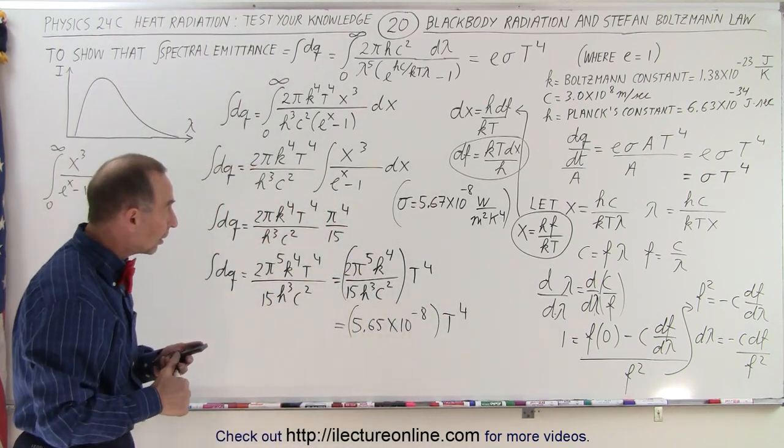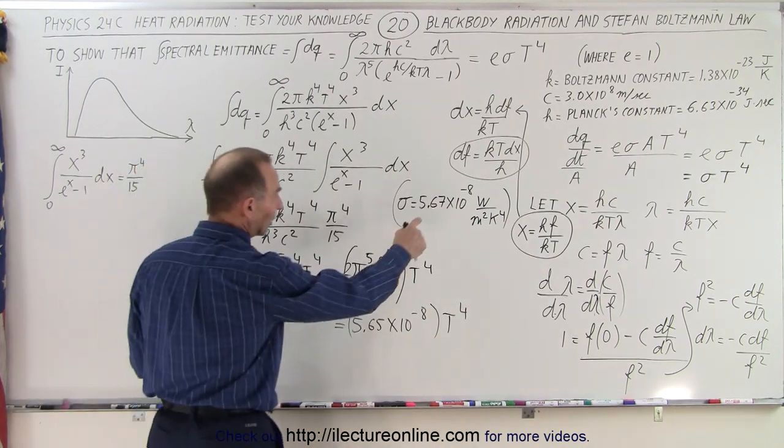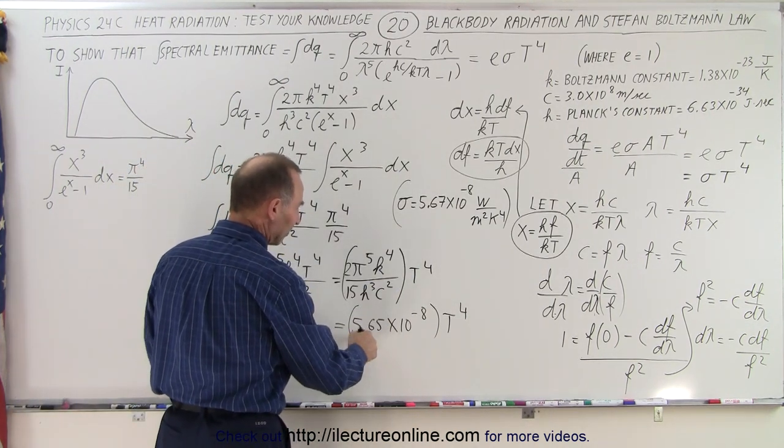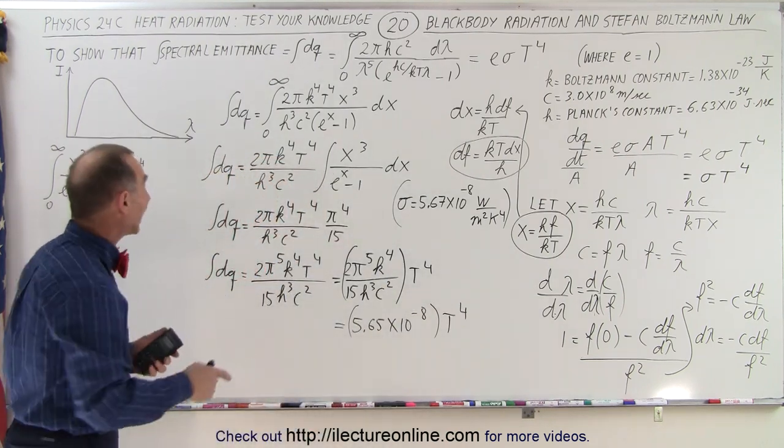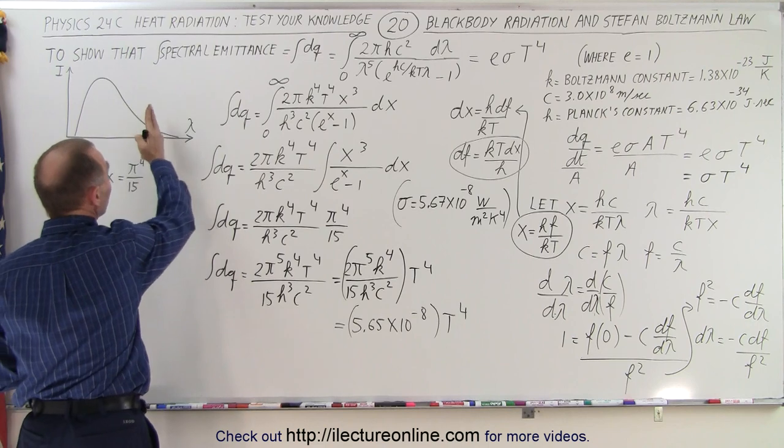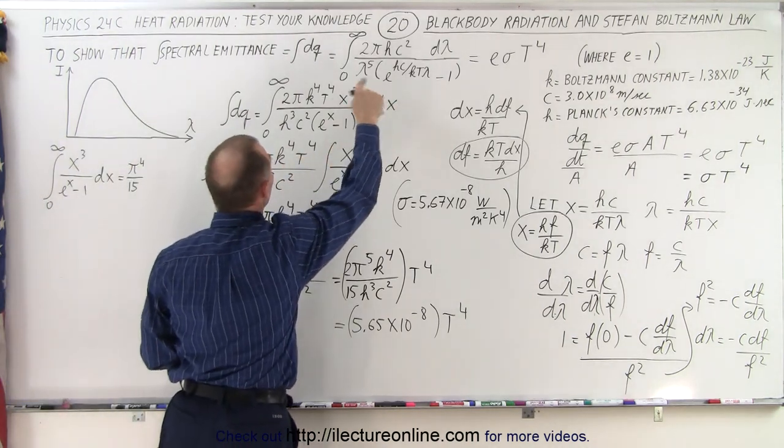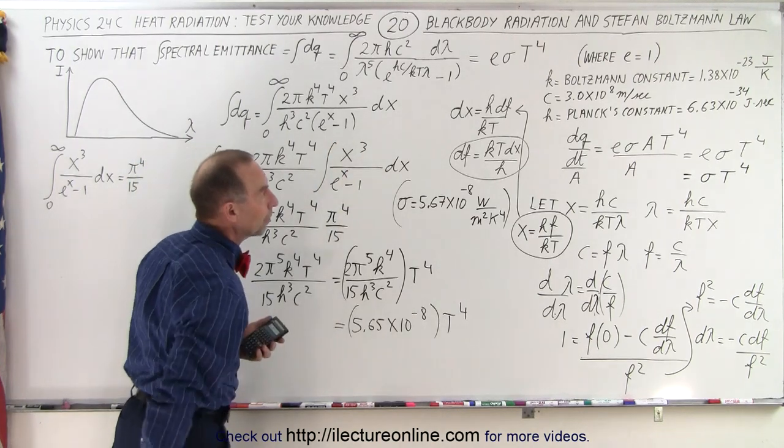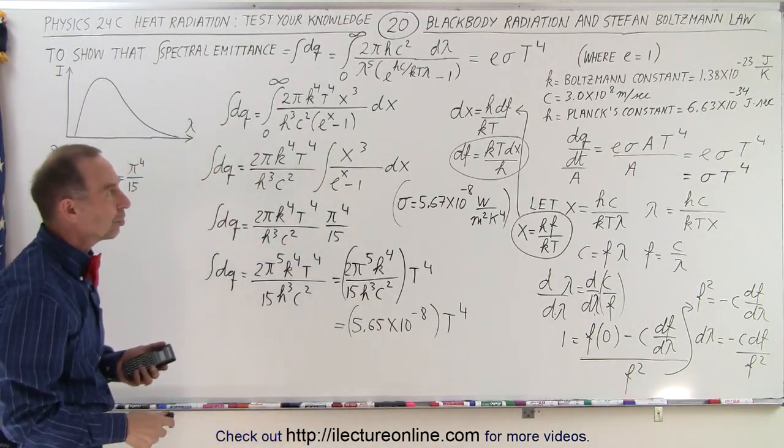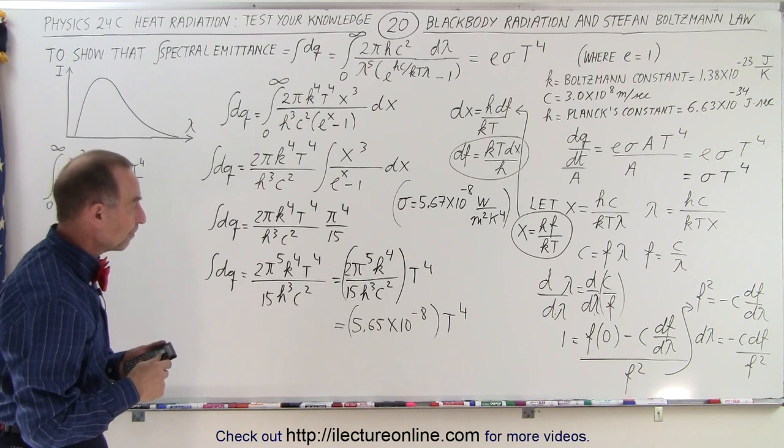So this is equal to 5.65 times 10 to the minus 8 times T to the 4th power. And notice, did we get close? And we sure did. We didn't get quite 5.67, we got 5.65, but that's close enough times 10 to the minus 8. And so you can see that by integrating over the black body radiation curve, the equation that represents that curve, we end up with the emission, the power emission, or the intensity emission of the Stefan-Boltzmann's law.